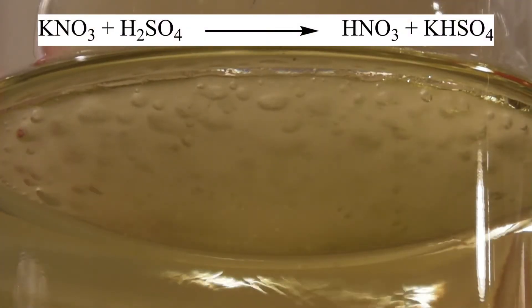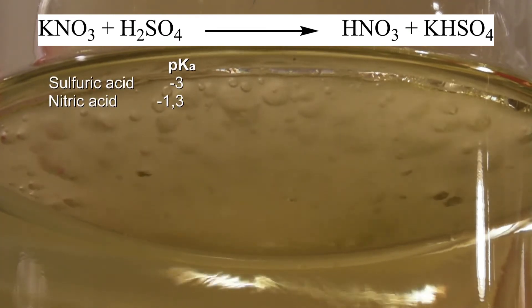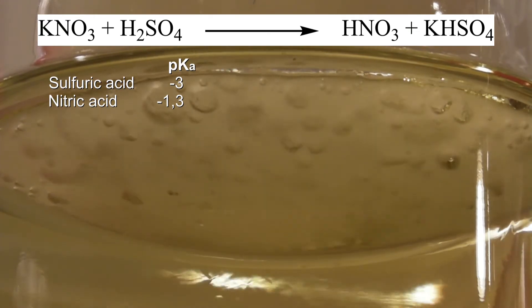The following reaction takes place: The sulfuric acid is a stronger acid than the nitric acid, which is why it can easily protonate the nitrate ion. Nitric acid and potassium bisulfate are formed.